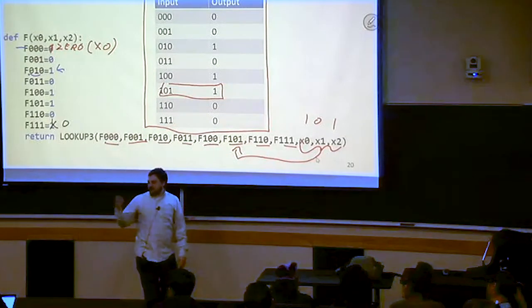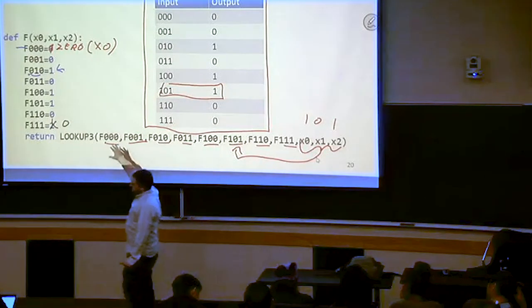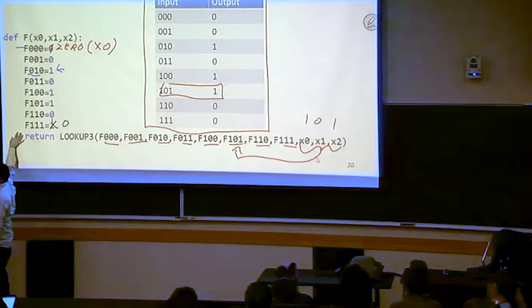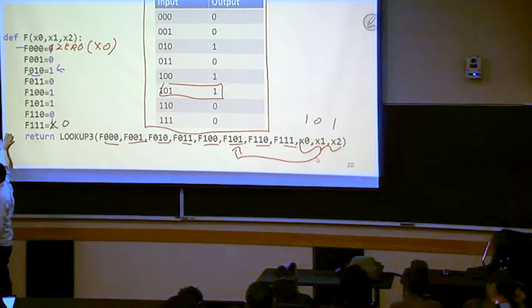This just says that for any function you give me, I can always find at least one program to implement that function. But there might be others, there might be some that are going to be more efficient.